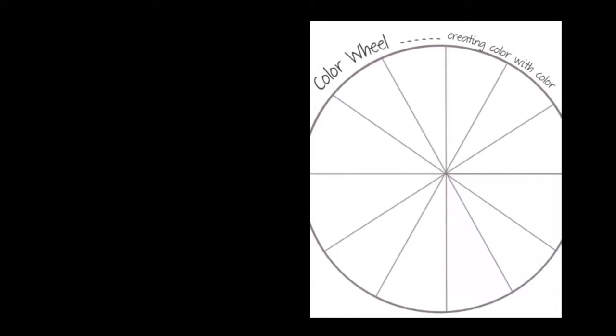To begin making our color wheel, you'll need a 9x12 piece of paper and a circle stencil, as well as a pencil and a ruler. Create your circle. This will be the outside edges of our color wheel.